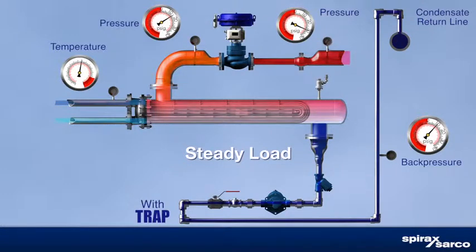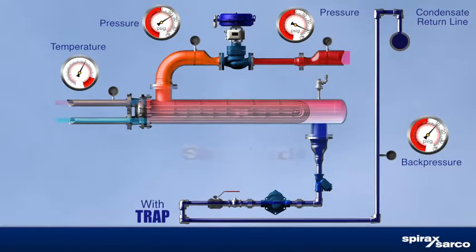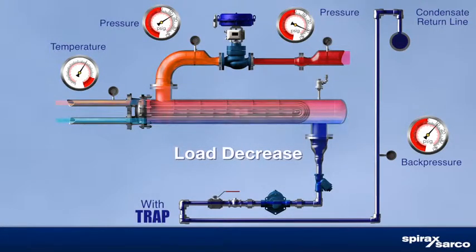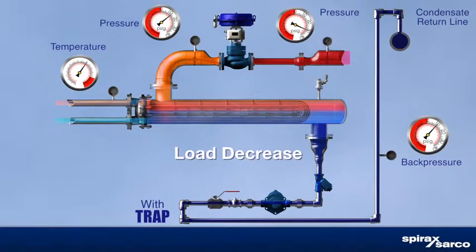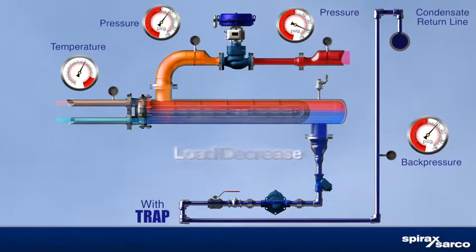Under a steady high load, differential pressure removes the condensate from the heat exchanger. Under reduced heating load, the control valve throttles down, reducing the steam pressure inside the heat exchanger. This also reduces the differential pressure across the steam trap, making the trap unable to remove the condensate.